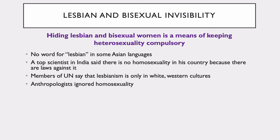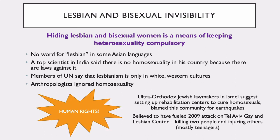A few examples: there is actually no word for lesbian in some Asian languages. A top scientist in India has been quoted as saying there is no homosexuality in this country because there are laws against it. Members of the UN say that lesbianism tends to only occur in white Western cultures, and obviously this is not the case. Anthropologists too have not helped — early on, homosexuality was ignored by many early practitioners. This can become a real human rights issue. Among ultra-Orthodox Jewish lawmakers in Israel, they were suggesting setting up rehabilitation centers to, quote-unquote, cure homosexuals, and went on to blame them for earthquakes experienced within the country. Many believe this fueled a 2009 attack on the Tel Aviv Gay and Lesbian Center, which led to the death of two people and injured several others, mostly teenagers.